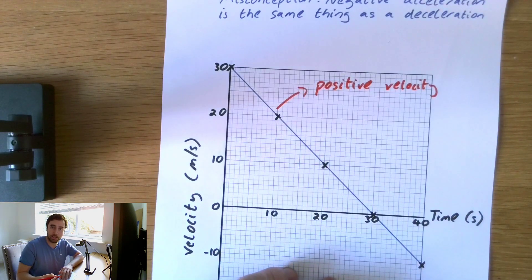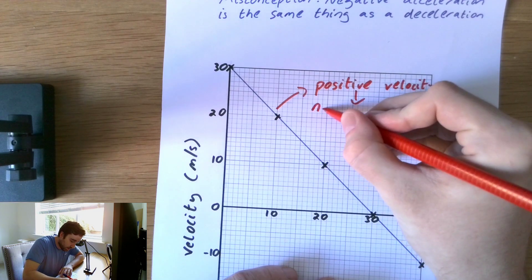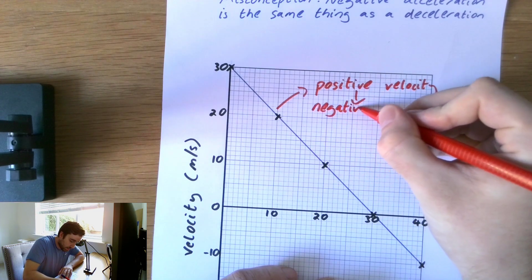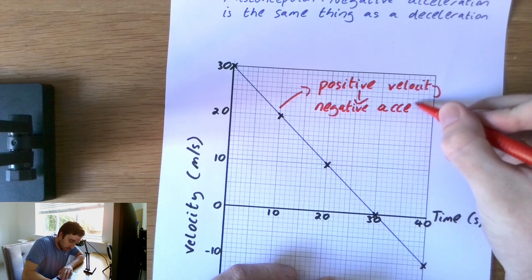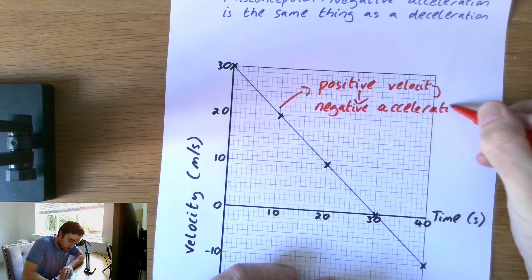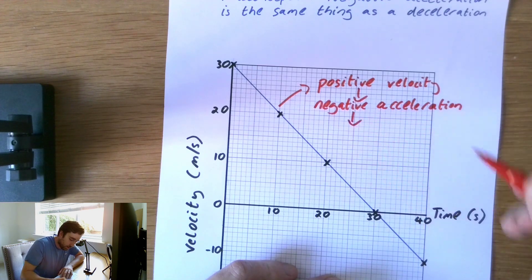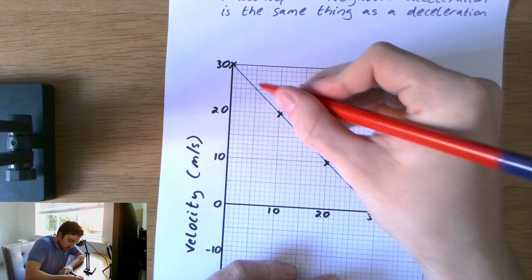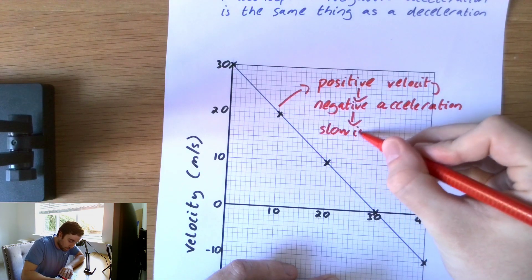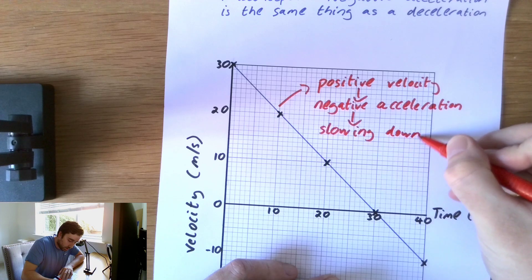Because velocity is a vector and so its direction matters. Now we are here applying a negative acceleration backwards and this leads, as we can see, to the object slowing down.